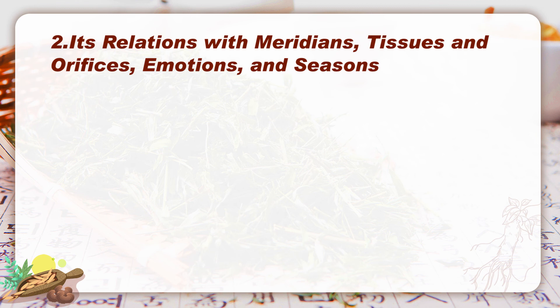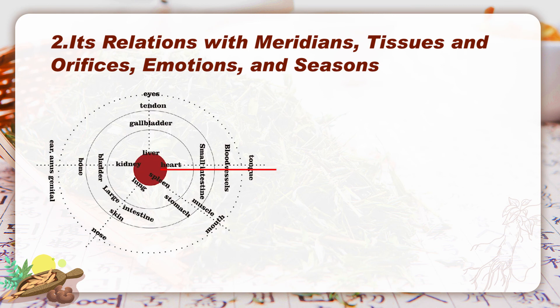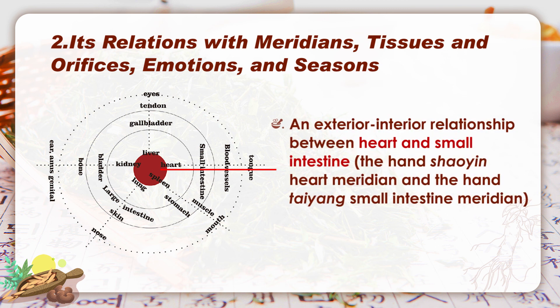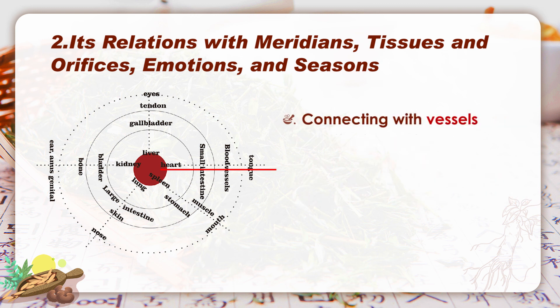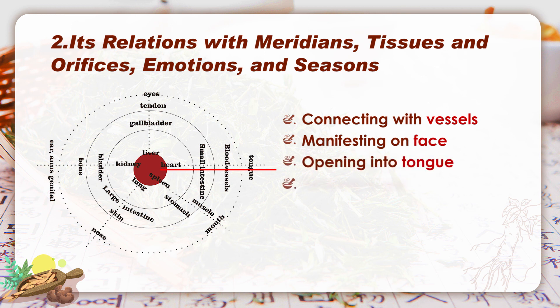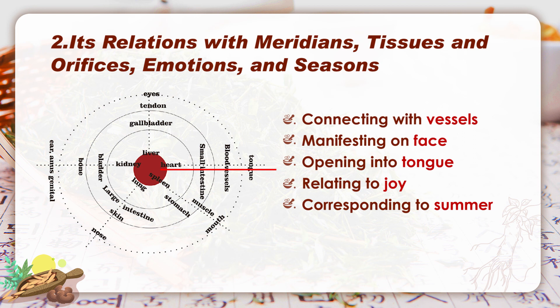For its relations with meridians, tissues and orifices, emotions and seasons, these are relatively easy to understand, and we have mentioned the related contents in holistic concept and five element theory. Look at the figure again. Heart and small intestine build up an exterior-interior relationship based on two meridians, which are the hand shao yin heart meridian and the hand tai yang small intestine meridian. Furthermore, heart is connected to blood vessels, manifesting on the face, opening into the tongue, relating to joy, and corresponding to summer. All these are significant when TCM makes diagnosis and conducts treatment accordingly, so keep them in mind. Thank you for your attention, and see you next time.